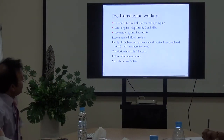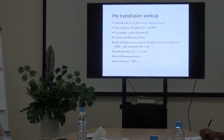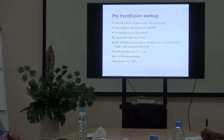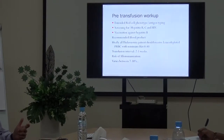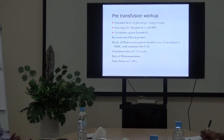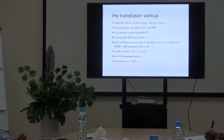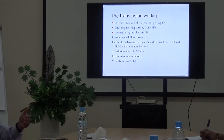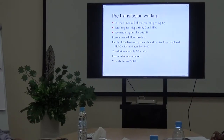Before starting transfusion, we must register the patient and do a full red cell phenotype, including not only ABO but full Rh phenotype including big C, D, and E, as well as the Kell phenotype. We also screen for hepatitis B and C, and administer hepatitis B vaccination if not previously vaccinated. Blood products should ideally be leukodepleted packed RBCs, as this decreases transfusion-transmitted complications, especially febrile non-hemolytic transfusion reactions. The transfusion interval is between two to four weeks.